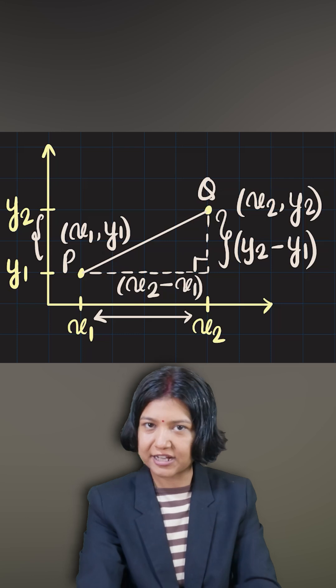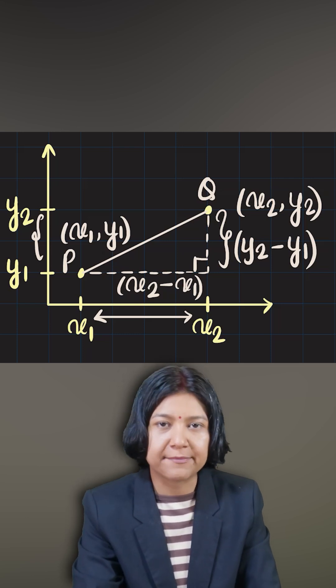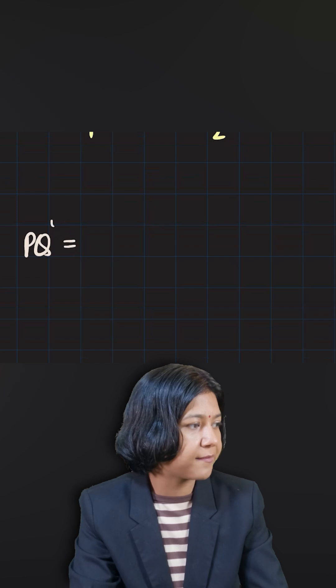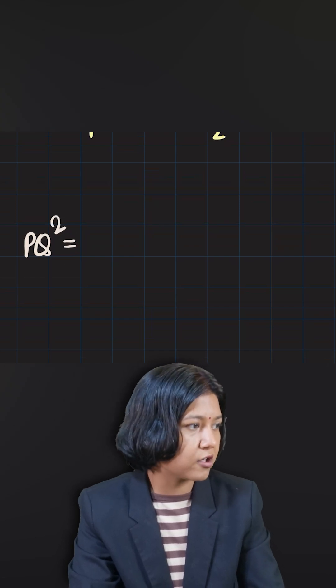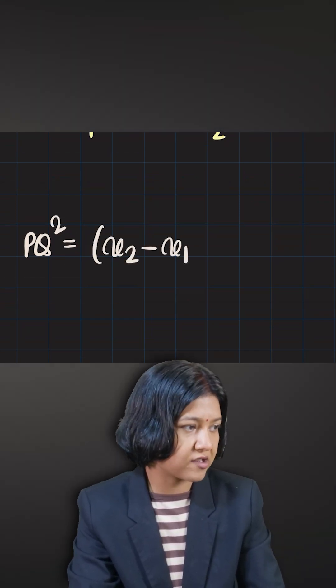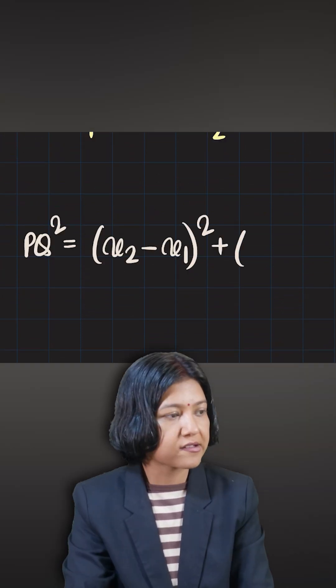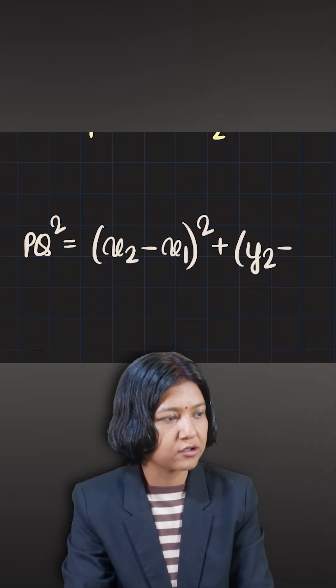So when I have the two legs of a right triangle, then I can always find the hypotenuse by simply taking their sum. So I'm saying that the square of the hypotenuse has to be equal to the square of the base, which is x2 minus x1, or just the square of this side, plus the difference of the y coordinate whole squared.